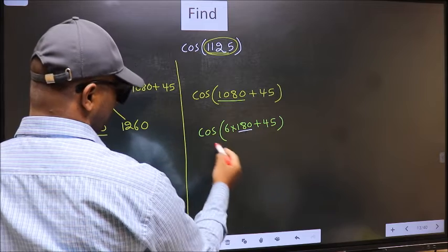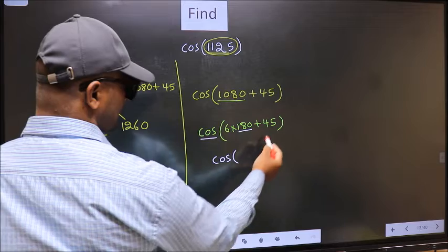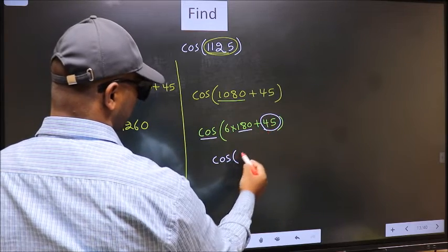Next. Here we have 180, so cos is not going to change. It will remain cos. And inside, we get this angle, 45.